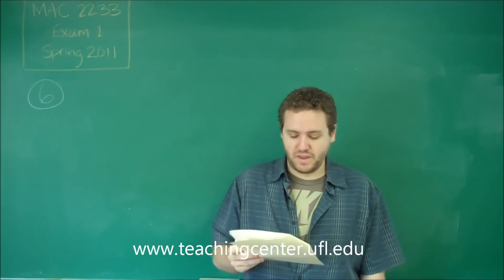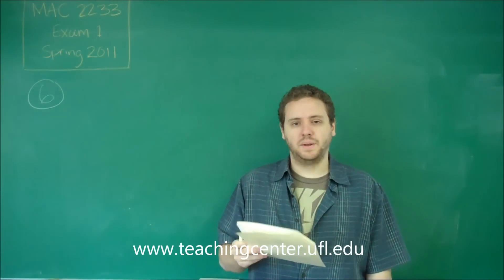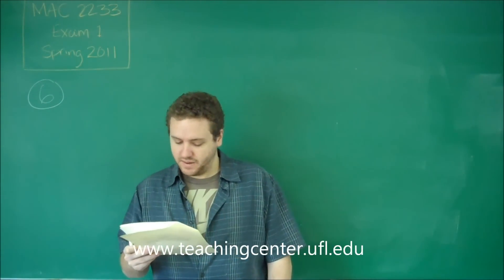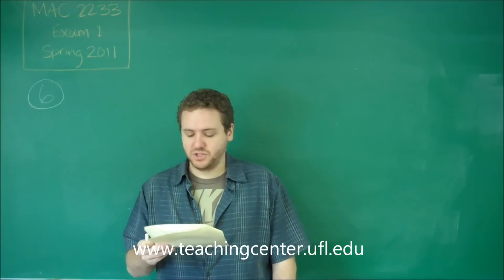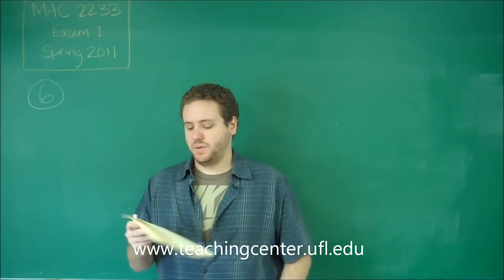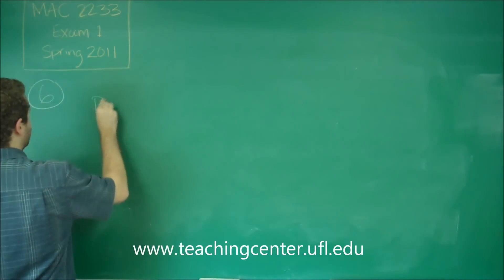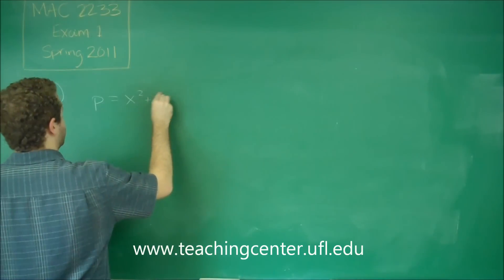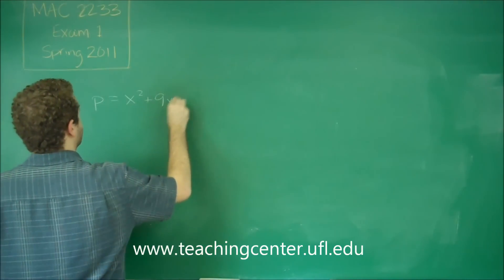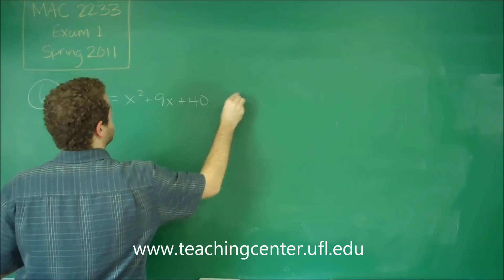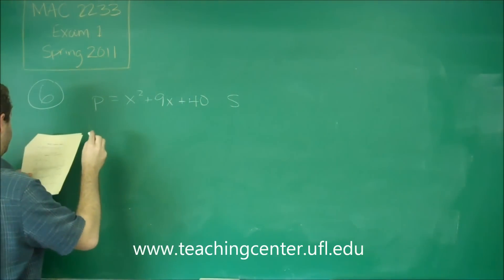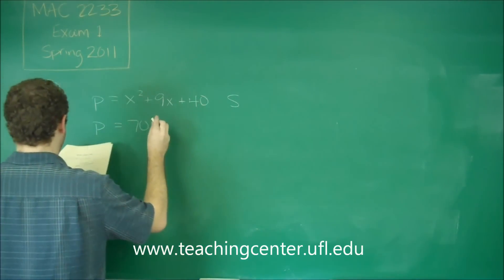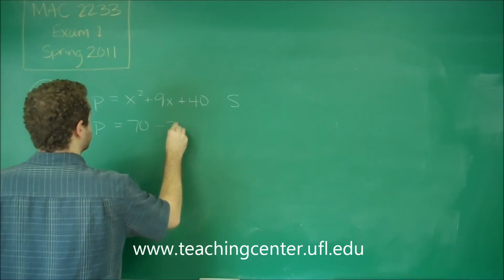For number six, we have an equilibrium quantity and price question. We're given supply and demand functions. The supply function is P equals x squared plus 9x plus 40. Our demand function is P equals 70 minus 2x squared.